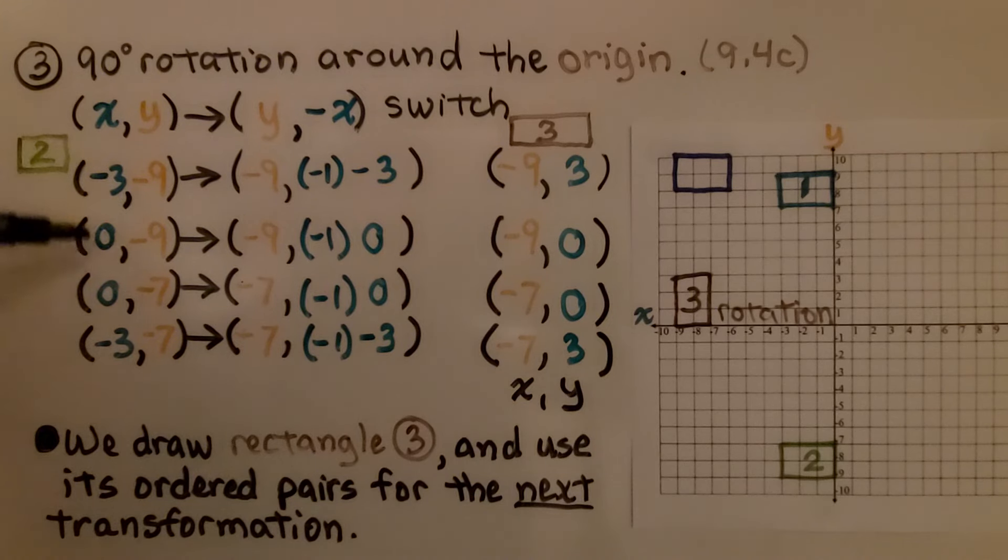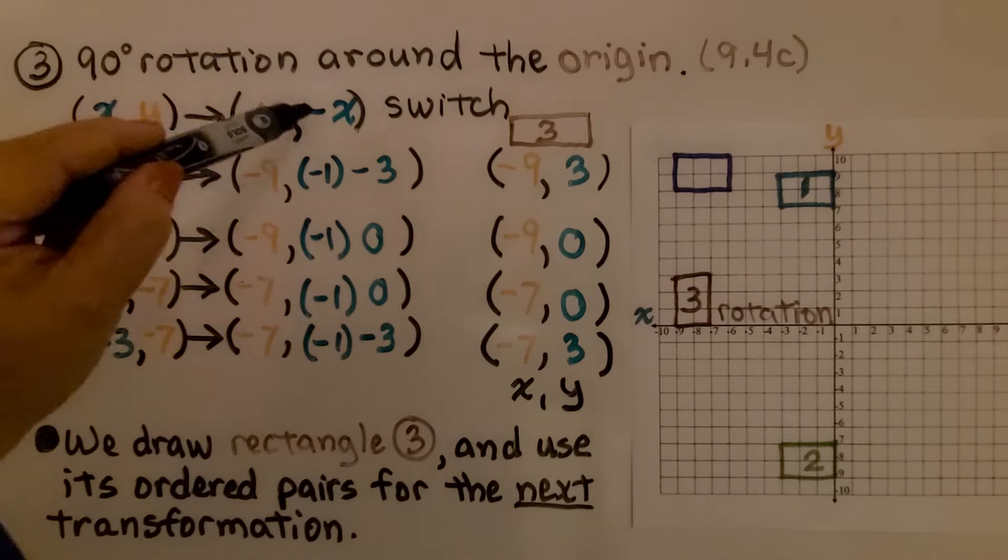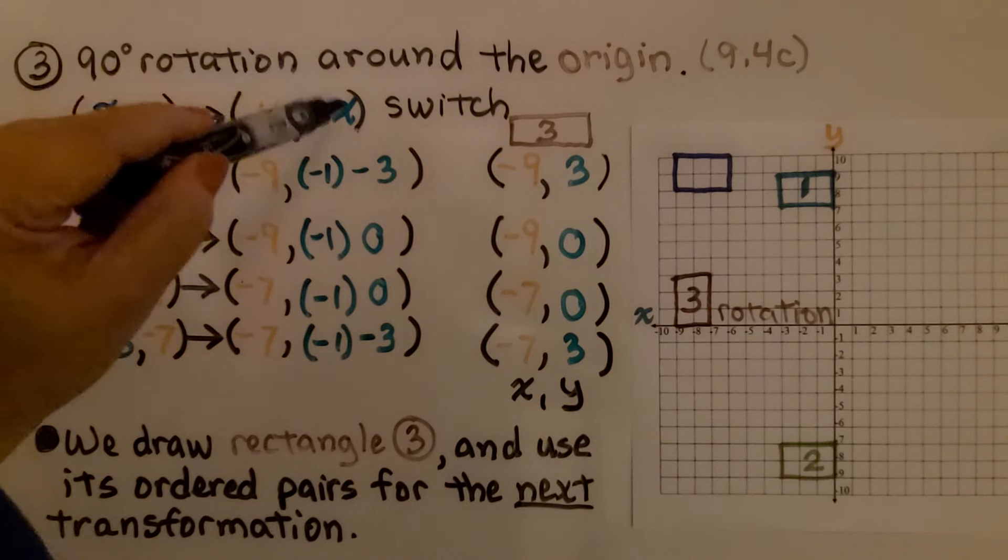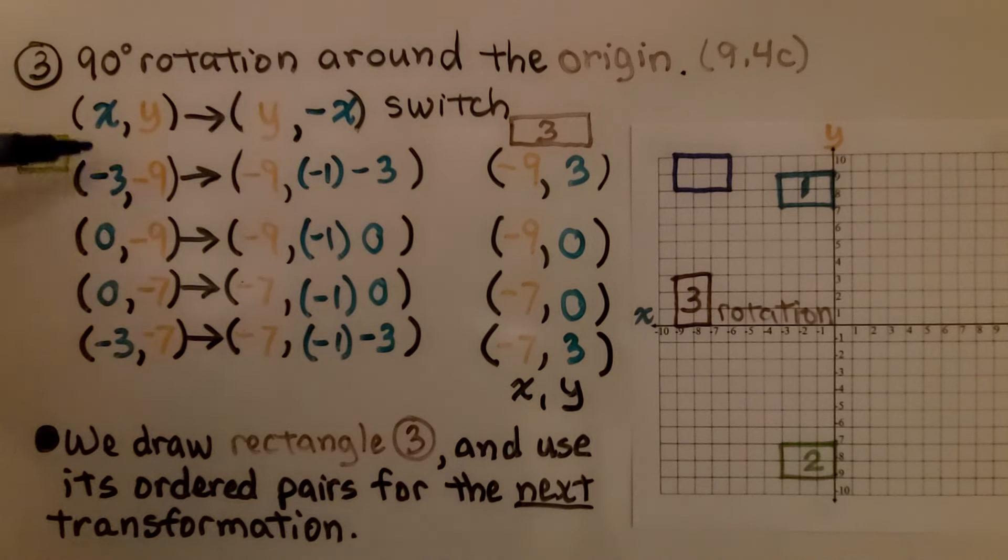We take the ordered pairs from number 2, rectangle down here, and apply this y, negative x. Remember, we have to switch them.